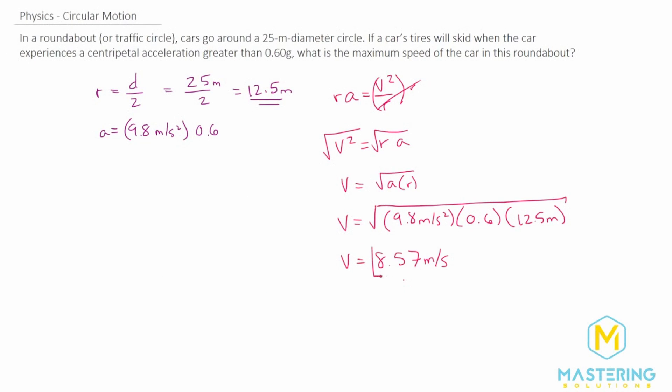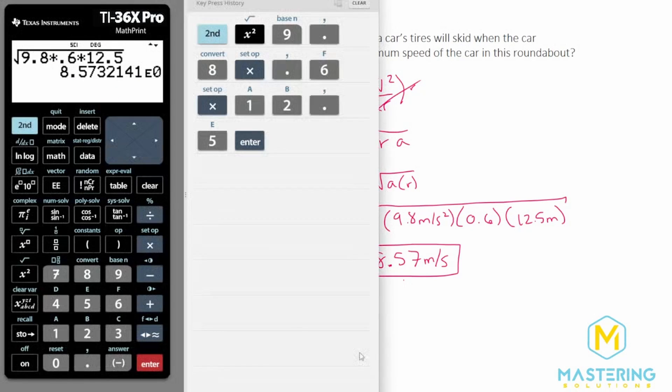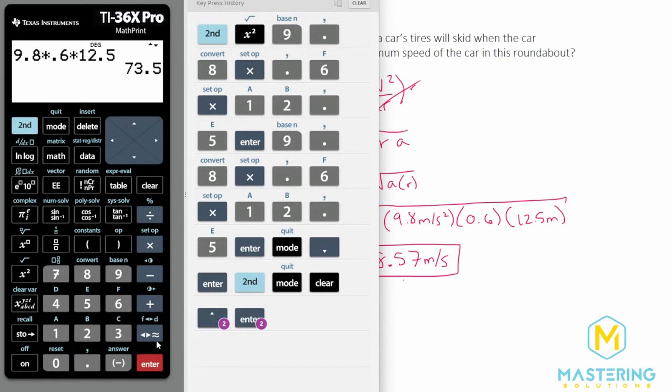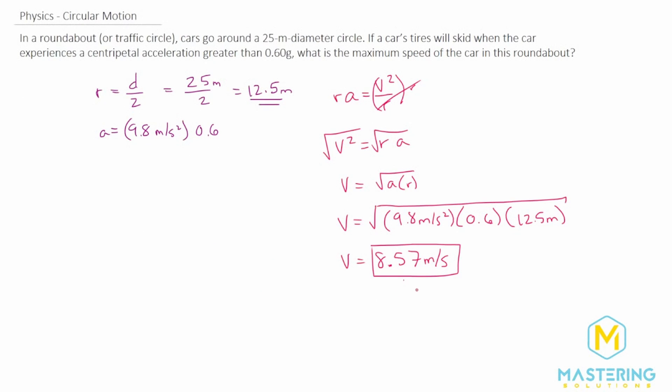I would imagine they've caught it at this point, but the book actually got this wrong. They forgot to take the square root of all this, so they put their number as v squared. So if you take all this, 9.8 times 0.6 times 12.5, they gave the answer as 74 meters per second. That wouldn't make any sense. That's way too fast, and they just forgot to take the square root.